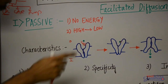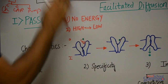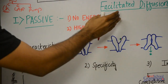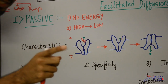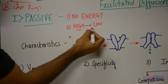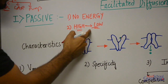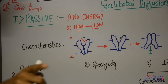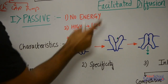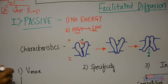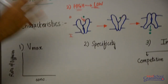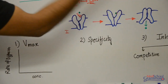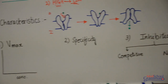An important point to remember: facilitated diffusion can occur in either direction — from outside the cell to inside, or from inside to outside. The direction is not fixed. What is fixed is that movement is always from high to low concentration. This direction from high to low is fixed, but the outside-to-inside direction is not fixed. This is a very important point to remember about facilitated diffusion.